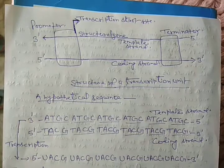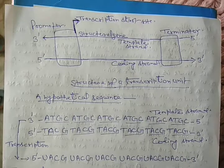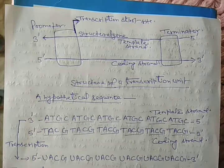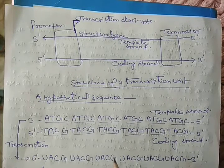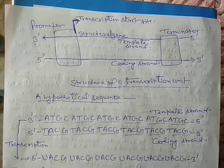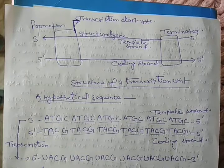Replication, transcription, and translation all occur in the 5' to 3' direction because new nucleotides are always added at the 3' end. That is why transcription always proceeds in the 5' to 3' direction.